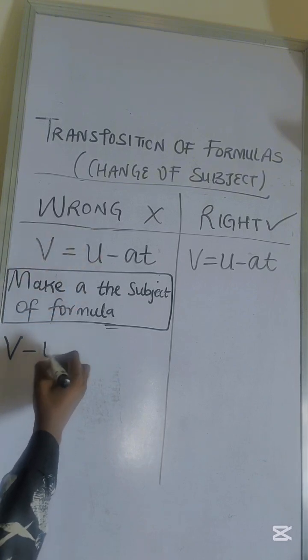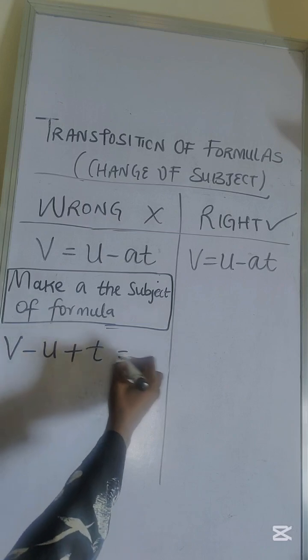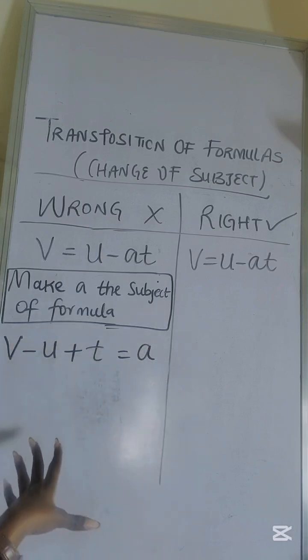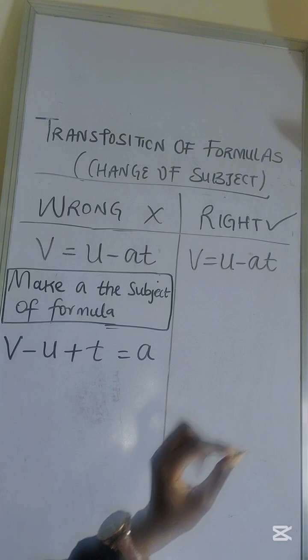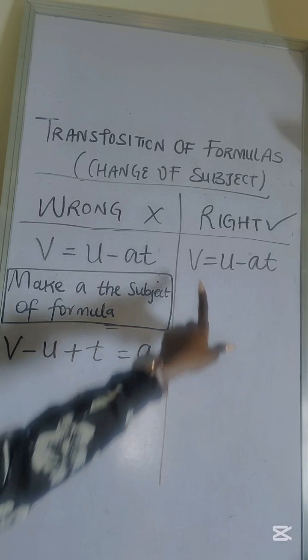Moving this one minus u, moving this one plus c equals a. This is wrong. You would have to isolate a, let it stand on its own while you work with the others. What does that mean? V is already far away from a, it's on the other side of the equal sign.